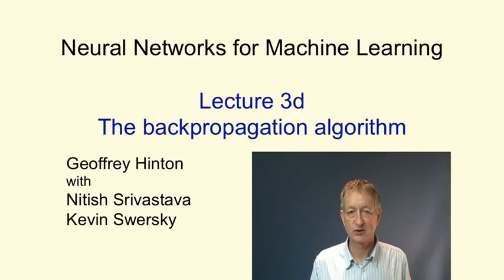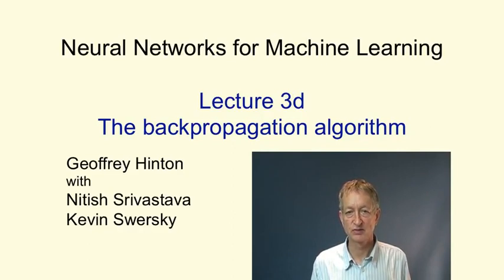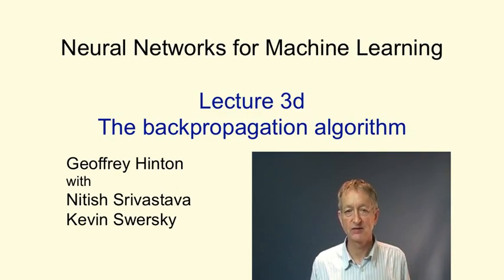Now that we have the preliminaries out of the way, we can get back to the central issue, which is how to learn multiple layers of features. In this video, I'm finally going to describe the backpropagation algorithm, which was the main advance in the 1980s that led to an explosion of interest in neural networks. Before I describe backpropagation, I'm going to describe another very obvious algorithm that does not work nearly as well, but is something that many people think of.